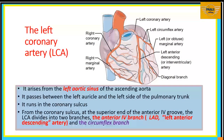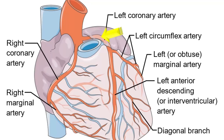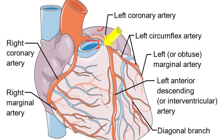We will next look at the left coronary artery. As noted, it takes origin from the left aortic sinus of the ascending aorta. It will pass between the left auricle and the left side of the pulmonary trunk, and as it does so, it will run into the left coronary sulcus — the sulcus between the left ventricle and the left atrium. From the coronary sulcus, at the superior end of the anterior interventricular groove, this artery divides into two terminal branches.